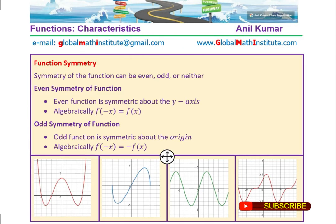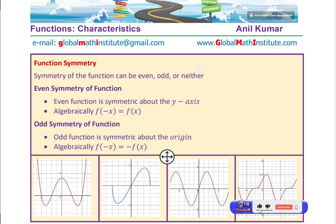You know that the symmetry of functions could be even, odd, or neither. Even symmetry of the function means that the function is symmetric about the y-axis. Algebraically, f(-x) should equal f(x). For odd symmetry, the function is symmetric about the origin. Algebraically, f(-x) = -f(x). Here we have provided you with four graphs. Can you figure out which ones have even symmetry, which have odd, which has neither?